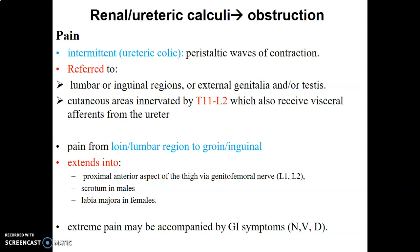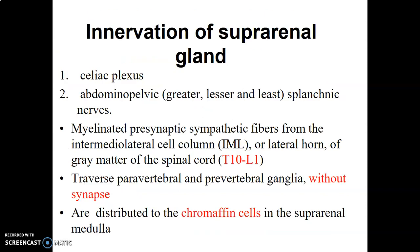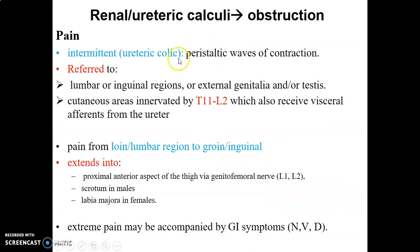The pain is intermittent and peristaltic, because there is peristalsis of the ureter. Since the ureter moves from the kidney downwards to the bladder, the patient will have pain in the lumbar region, in the inguinal region, and in the external genitalia or testis. This is because the cutaneous supply of skin over these regions is T11 to L2, and the same T11 to L2 spinal cord levels give nerves to the ureter and also to the skin of the lumbar region, inguinal region, and external genitalia or testis.